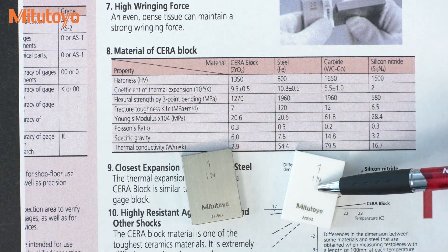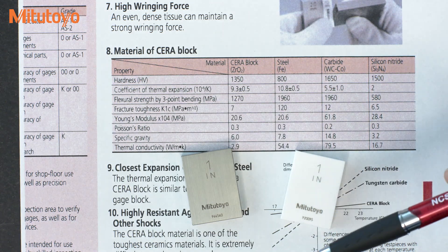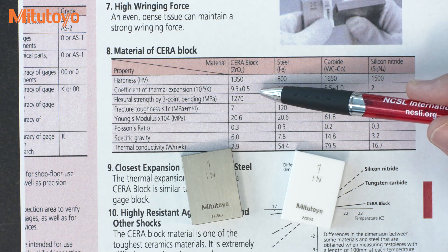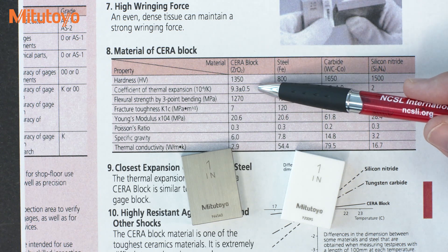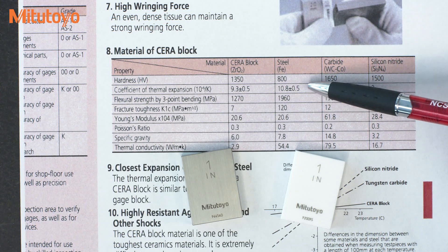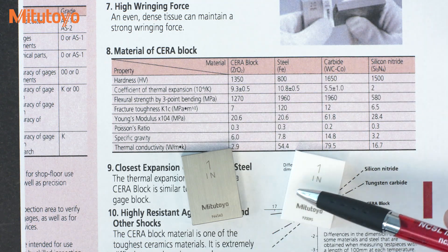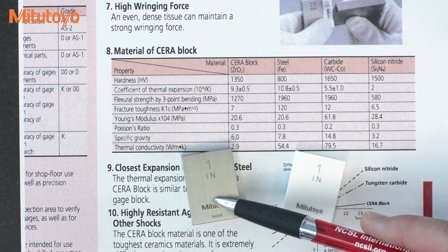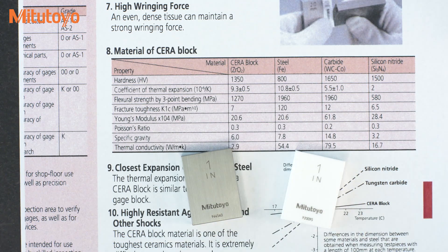Mitutoyo ceramic gauge blocks have a slightly lower CTE — it's 9.3, not the 10.8. Mitutoyo actually designed the ceramic gauge blocks to have a CTE close to steel to reduce thermal problems when they're used.